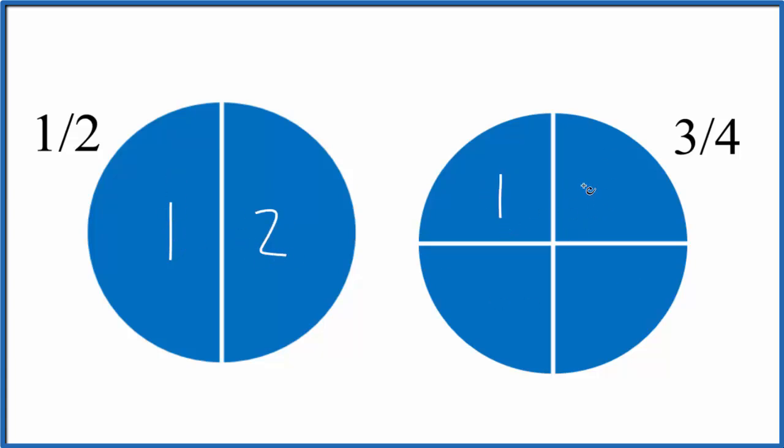Over here, we have one, two, three, four parts, so each part is one-fourth of the circle.